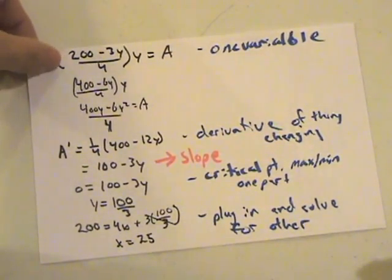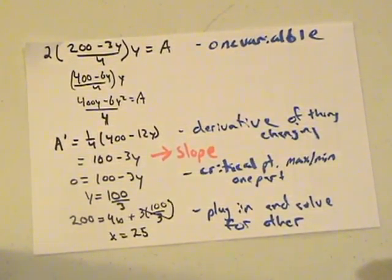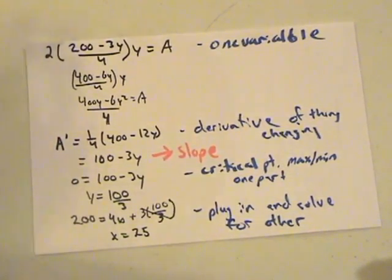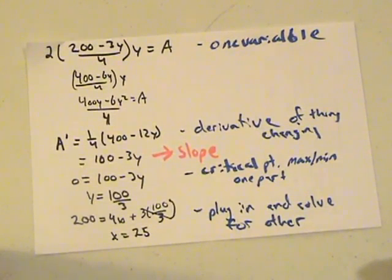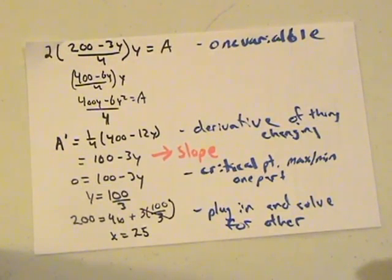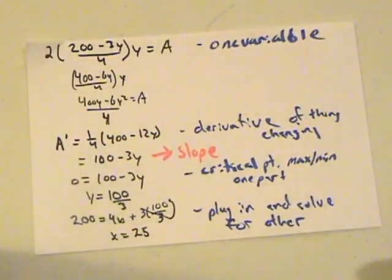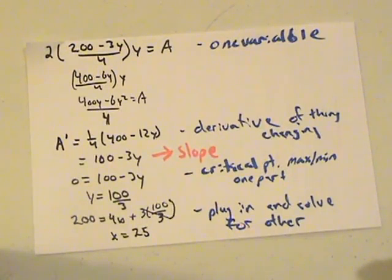Now that we have area all by itself, we have to take the derivative of the thing that's changing so that we're able to maximize it. Because we want to get to the point of the critical points because that's how we maximize functions. That's how we learned at the very beginning. So we take the derivative of the area and we put 1 fourth out of the side. We're taking the derivative of 400y minus 6y squared. So we get 400 minus 12y. And we simplify it and it's 100 minus 3y.